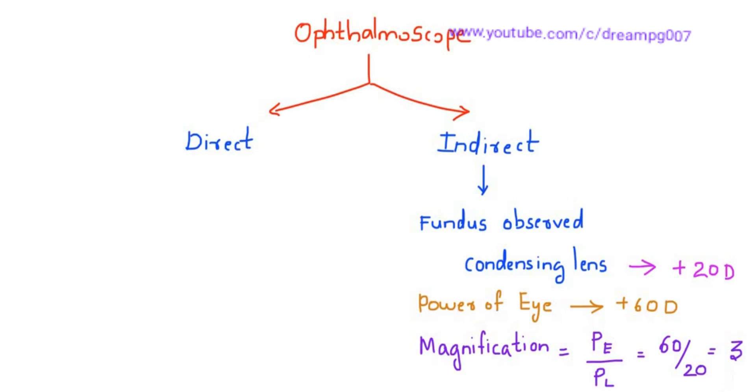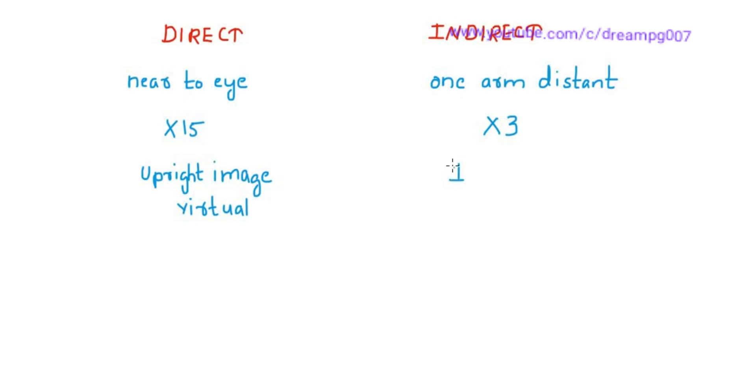This is the direct ophthalmoscope. It looks like a torch. Let's look into the differences between direct and indirect ophthalmoscopy. Direct ophthalmoscopy is used near to the eye, whereas indirect ophthalmoscopy, we are keeping one arm's distance. Magnification under direct ophthalmoscopy is about 15 times, whereas magnification in indirect ophthalmoscopy is about 3 times. The image in direct ophthalmoscopy is upright and virtual, whereas image in indirect ophthalmoscopy is inverted and real.